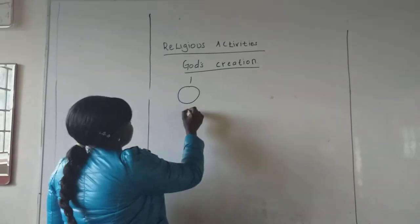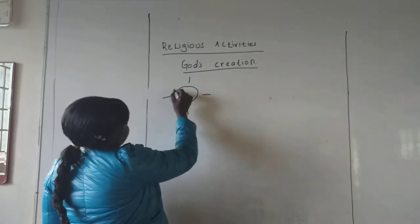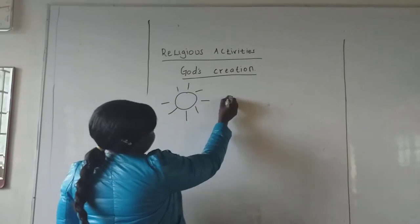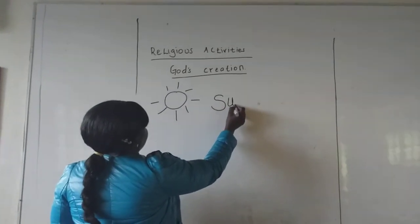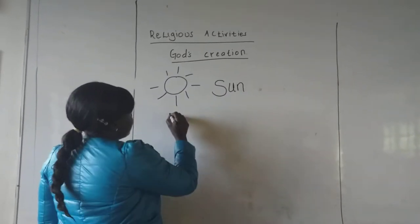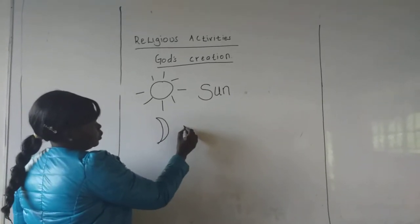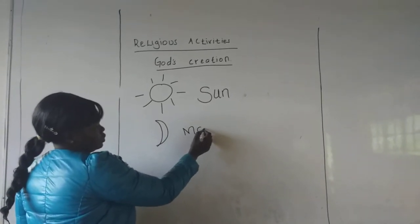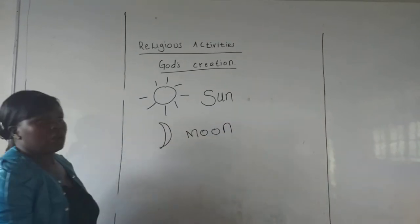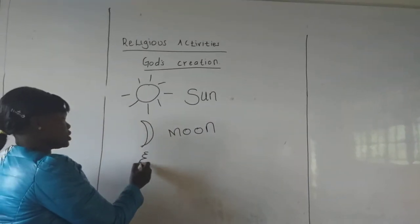God created the sun. Moon. He also created trees.